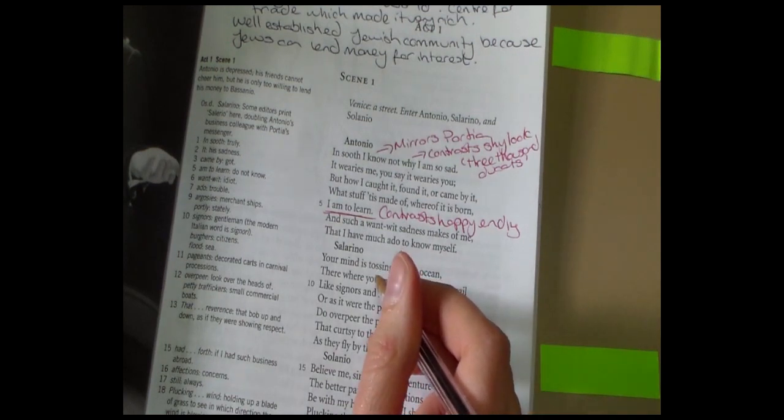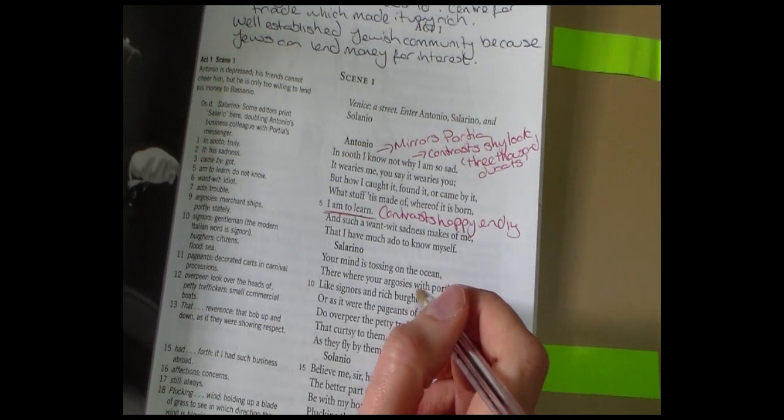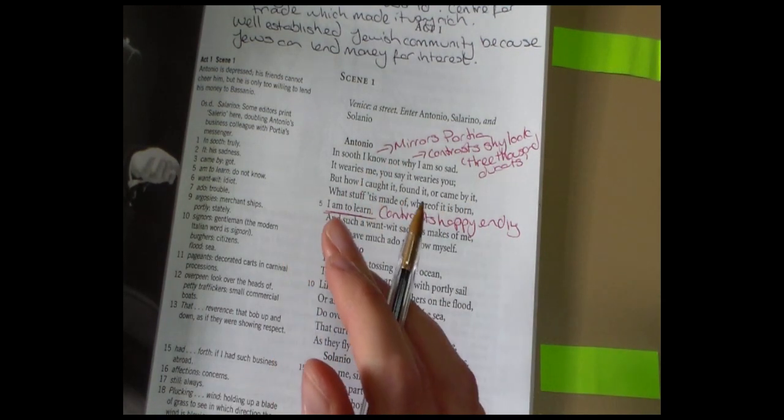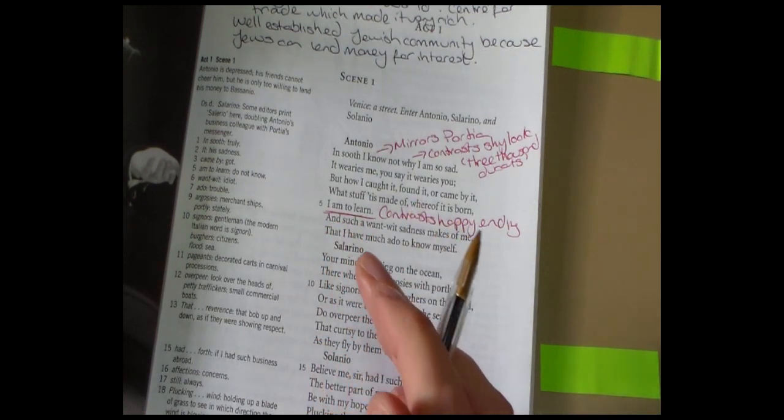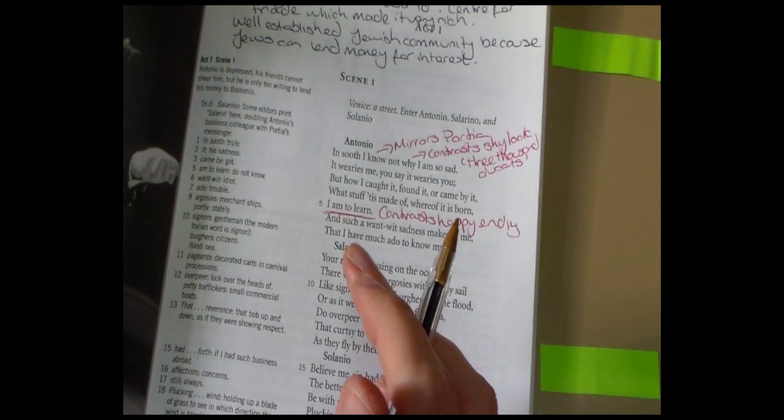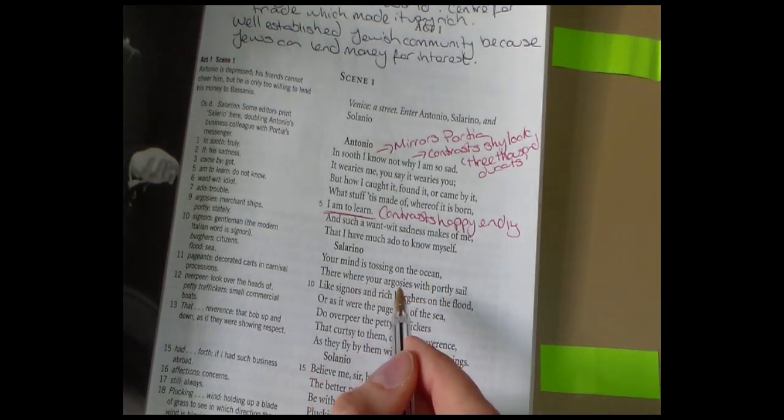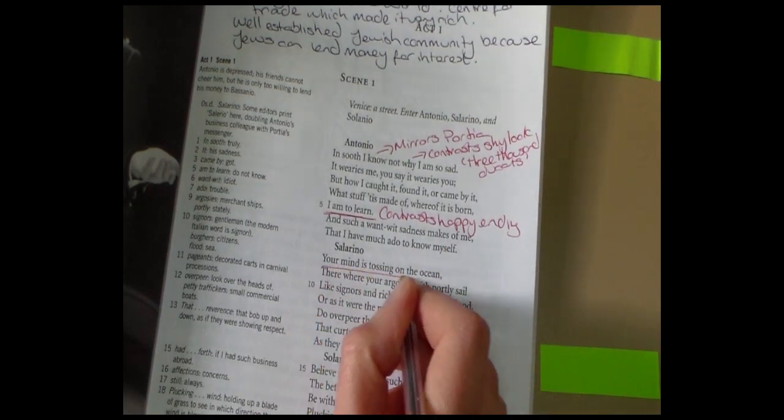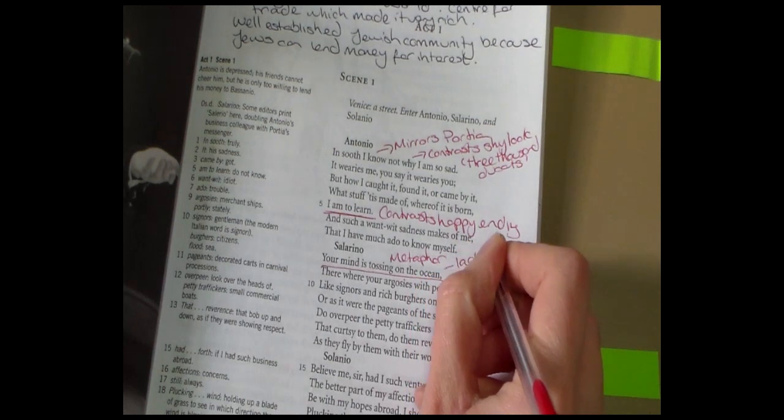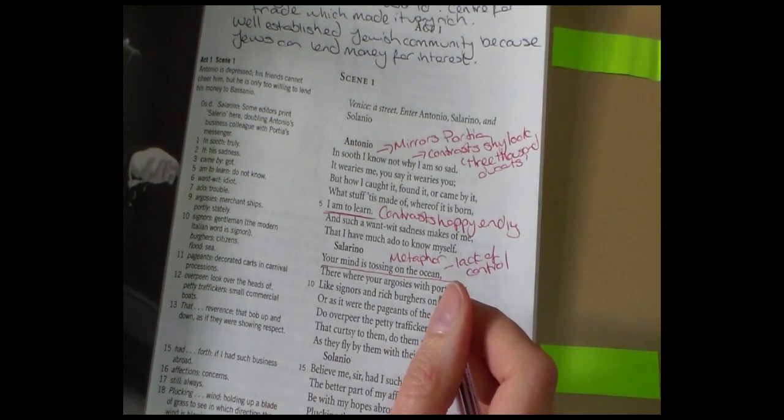Now Salarino is quite worried about Antonio and he's worried about the reason that Antonio is sad. So he says, your mind is tossing on the ocean. Now he uses a metaphor here to suggest that Antonio's mind is all over the place, much like Antonio's ships, because remember Antonio is a merchant, and at the moment he has sent out all of his money to go buy different things from around the world and to bring them back on the ships so that he can sell them. So at the moment all of his money is tied up in these ships and in these goods. So Salarino suggests that his mind is all over the place because his money is all over the place. So we can put down next to this line that it's a metaphor and it shows a lack of control. It also reminds us of where his money is and where his mind is as a result.